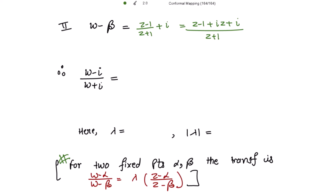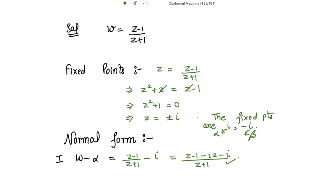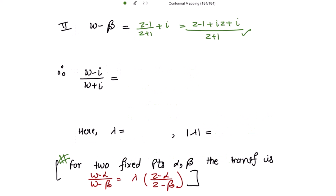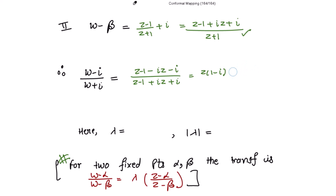Then we just divide these two equations. So we get w minus alpha over w minus beta, that is w minus iota over w plus iota, and that is equal to z minus 1 minus iota z minus iota over z minus 1 plus iota z plus iota. Now just take the factors — taking z common we get 1 minus iota, and writing minus 1 as plus iota squared and taking iota common we get iota minus 1, or taking minus outside and iota common we get 1 minus iota.